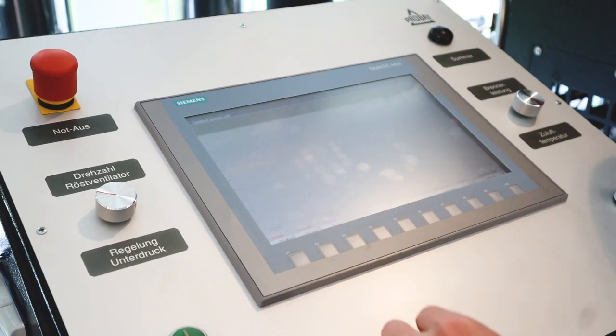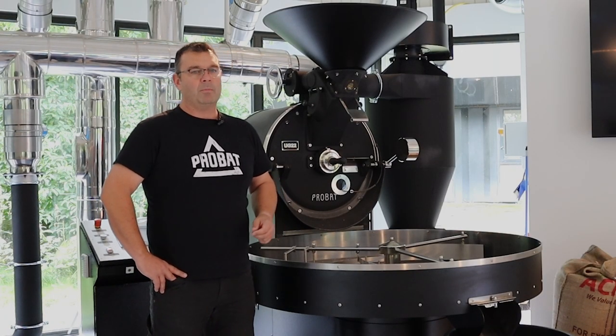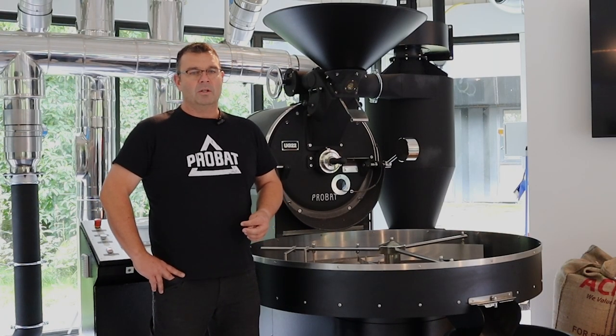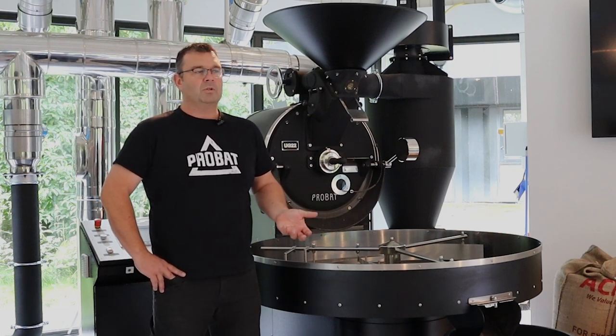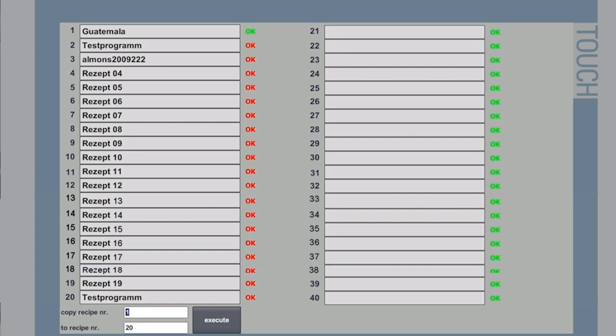The next page is F3. It shows actual values from the thermo elements. There's no real great graph to see at the moment because we don't have charged any coffee in. F4 is an important point. You can save all your recipes there. 40 you can save on our roaster and you also can copy them.